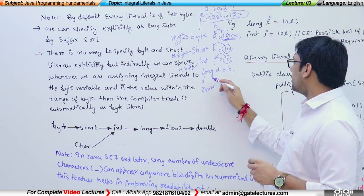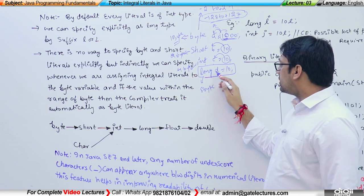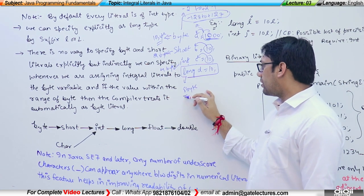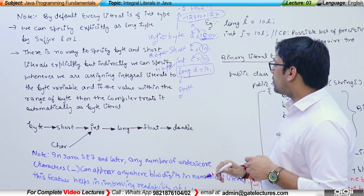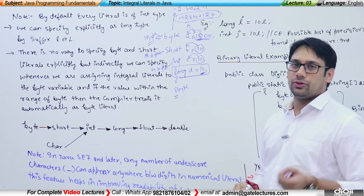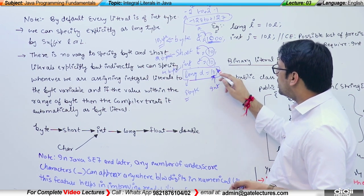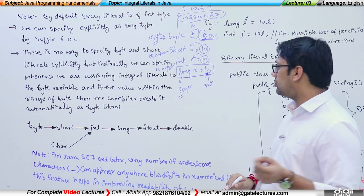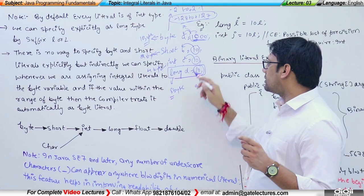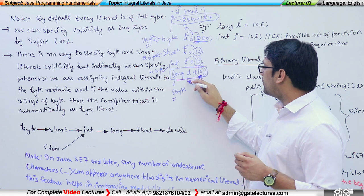Here is a special case with long d = 10. You know the range of numbers that a long variable can store — the size of the long variable is 8 bytes. Because this number 10 is actually an integer number, not a long number, and the range of integer is less than the range of long, it can automatically be stored.